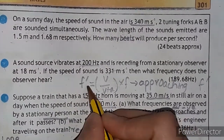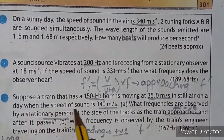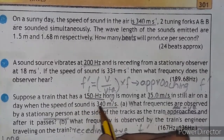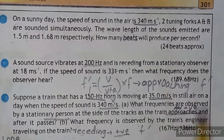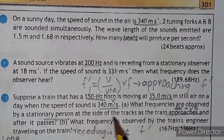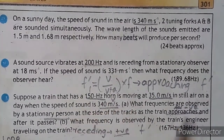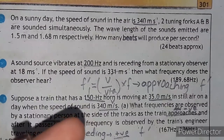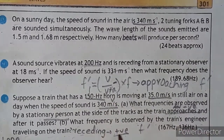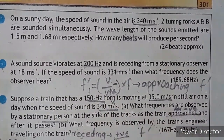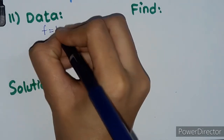Problem number eleven: a train has a horn frequency of 150 Hz and is moving at 35 m/s in still air. The speed of sound is 340 m/s. In part A, find the frequency observed by a stationary person at the side of the track as the train approaches and after it passes. For approaching, we use a negative sign; for receding, a positive sign.